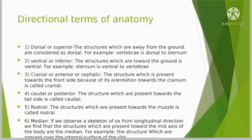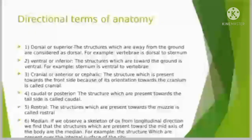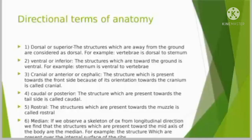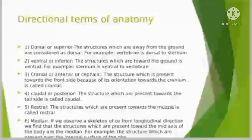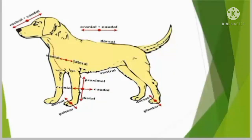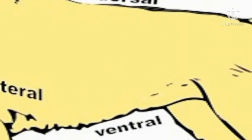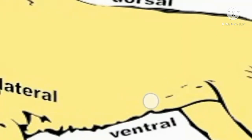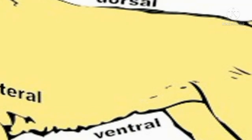Now I would like to move towards some directional terms. The first term is dorsal or superior — structures which are away from the ground are considered dorsal. The second is ventral or inferior — structures which are toward the ground are ventral. Here I have a picture of a dog with different anatomical terminologies. In the dorsal portion there lies the vertebra, and in the ventral portion there lies the sternum. So the vertebra is dorsal to the sternum.